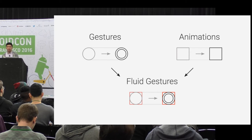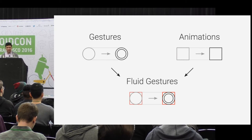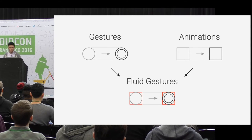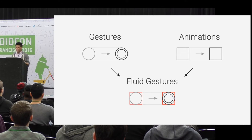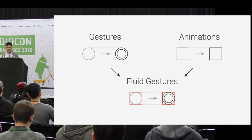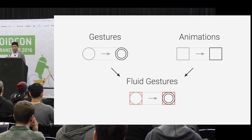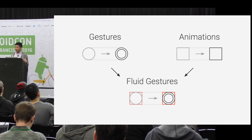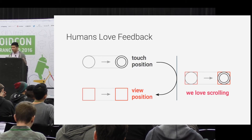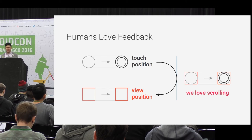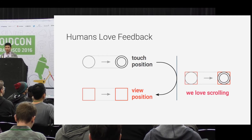The point of fluid gestures is similar to what Will was talking about with Rebound - you take gestures, you take these motions, and you combine them with animations. I call them fluid gestures. There's a much older term called direct manipulation, which says if the user can move a view on the screen at the same time as their finger is moving, then they have direct feedback.